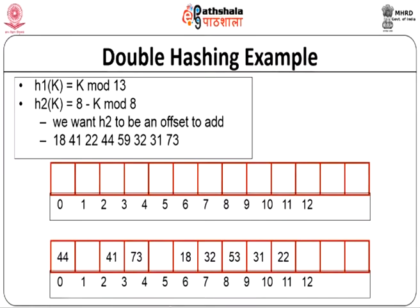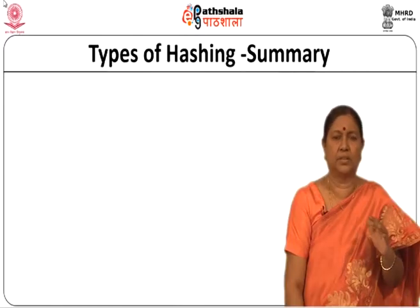Let us look at the summary of what we have covered. Separate chaining is the easiest to deploy. Linear probing is fastest but takes more memory. Double hashing uses the least memory but takes more time to compute the second hash function. Dynamic growth handles any number of inserts with less than 3x time overhead.